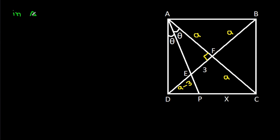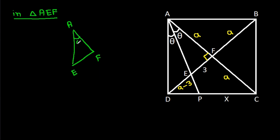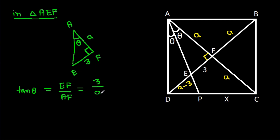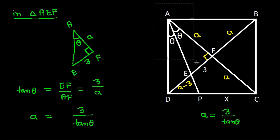Now in triangle AEF, this angle is theta. So tan theta = EF over AF = 3 over A. Therefore A = 3 over tan theta.